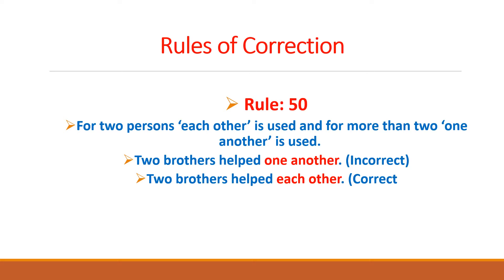We have studied 49 rules of correction so far. Today we would begin with rule number 50 about the correction of sentences. In rule number 50, the first point we need to consider is that for two persons, 'each other' is used, and for more than two, 'one another' is used. These are the two words: 'each other' and 'one another'.